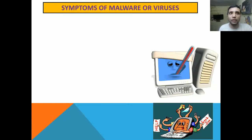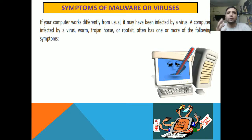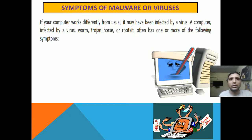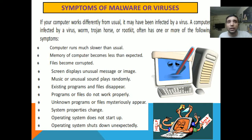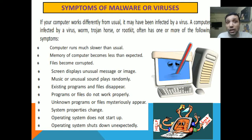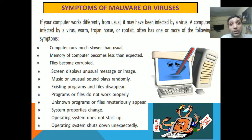Now let us see some symptoms of malware or viruses. If your computer works differently from usual, it may have been infected by a computer virus, worm, trojan horse, or rootkit. One of the symptoms is that the computer runs much more slowly than usual. The memory of the computer becomes less than expected — when our computer is infected with a virus it works very slow, and we may have memory problems even though the memory is available. The third symptom is that files become corrupted — a file which was working earlier might not work properly.